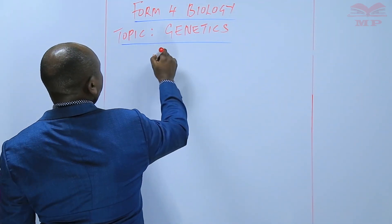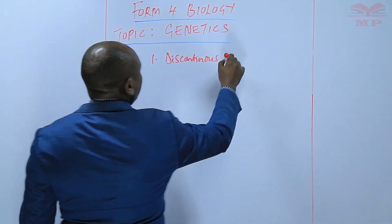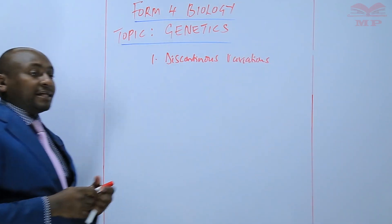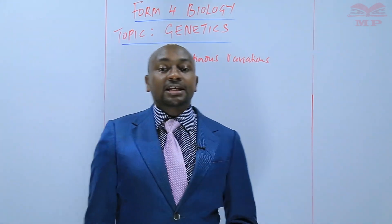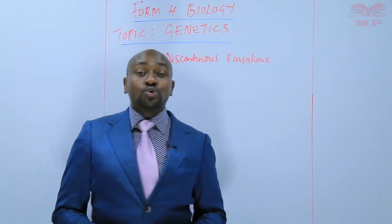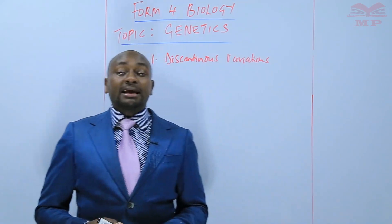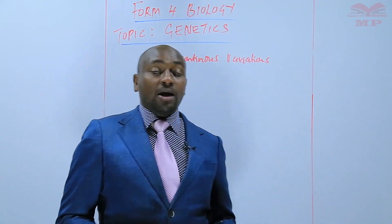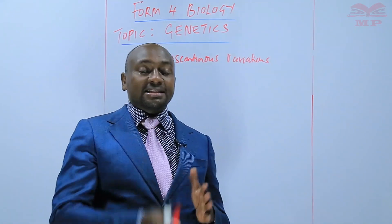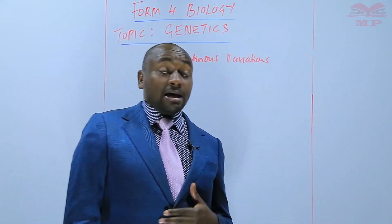Number one, we'll start with discontinuous variations. These are the variations that have no intermediates. For example, when you talk of something like sex, one is either male or female under normal circumstances and there is no other sex that is in between. So we don't have an intermediate there.